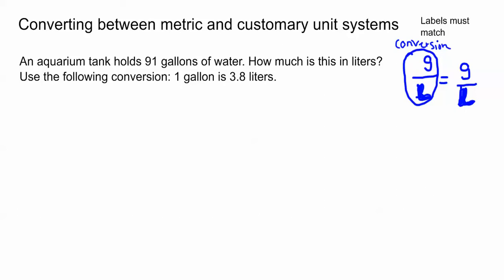It says an aquarium tank holds 91 gallons of water. How much is this in liters? Use the following conversion: 1 gallon is equal to 3.8 liters. So for every one gallon we have 3.8 liters. Okay so what we're going to do is we're going to take our conversion and set it up on one side of the proportion.